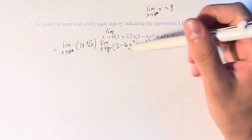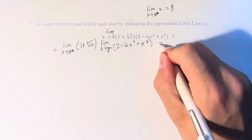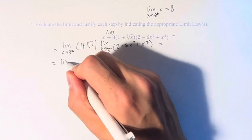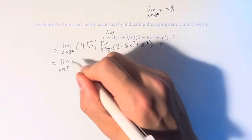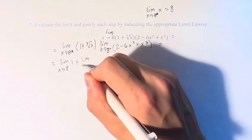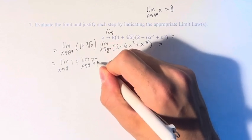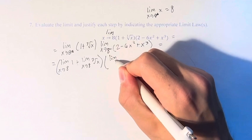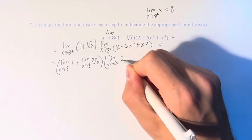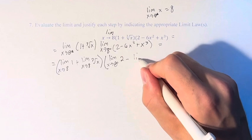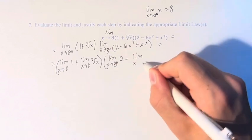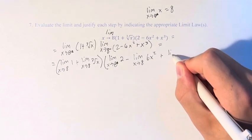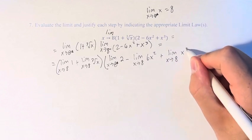Now that we've separated this product, we can go into each member and separate these further. The limit of 1 plus the cube root of x is the limit of 1 plus the limit of the cube root of x. This is times the limit of 2, minus the limit of 6x squared, plus the limit of x cubed.